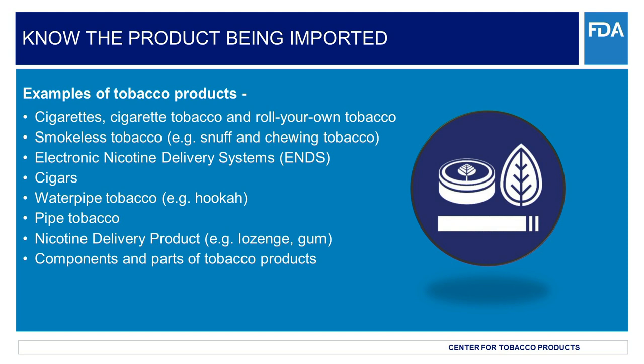Please be aware that FDA does regulate accessories of originally regulated tobacco products — cigarettes, cigarette tobacco, roll-your-own, and smokeless. Examples of accessories for originally regulated tobacco products are a lighter or ashtray. However, we currently do not regulate accessories of deemed products — ENDS, cigars, hookah tobacco, etc. Examples of accessories for deemed products are a pipe-carrying case or tongs for hookah.